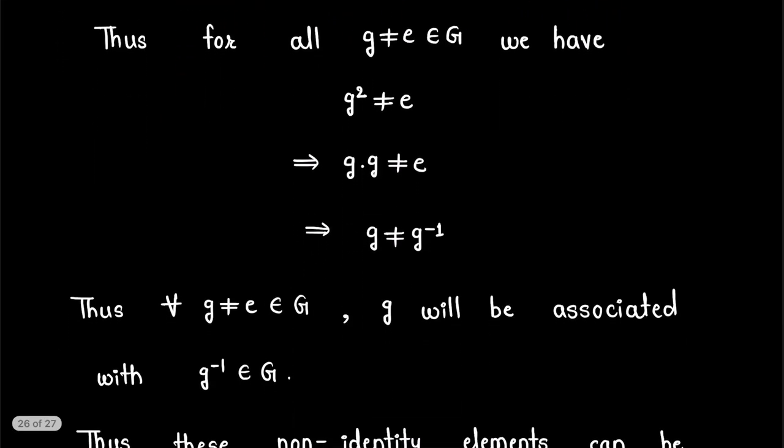Thus for all g ≠ e in G, we have g² ≠ e. Now g² can be written as g·g, so we get g·g ≠ e. This implies g ≠ g⁻¹.